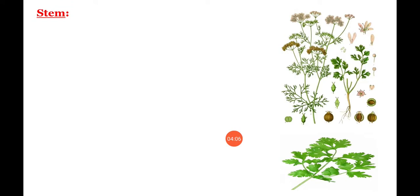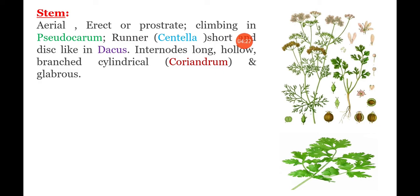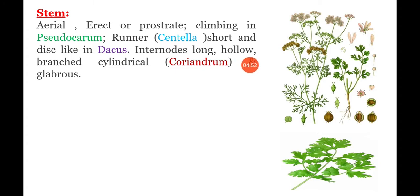Coming to vegetative characters — Stem. Stems are generally aerial, meaning they are exposed to the environment. They are erect or prostrate. In Pseudocorum, a climbing stem is present. In Centella, the stem is a runner. Stems are short and disc-like in carrot. Inter-nodes are long and hollow, meaning they are pipe-like. Stems are branched, cylindrical as seen in Coriandrum, and glabrous — meaning smooth, without any hair.